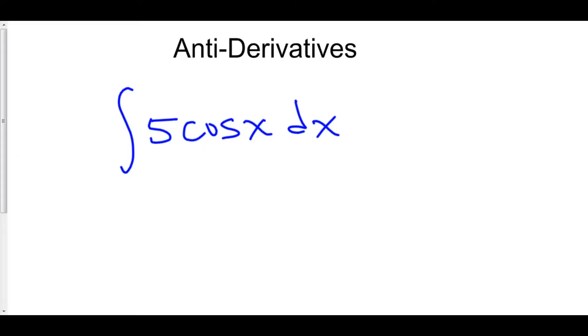Here we have the antiderivative of 5 cosine x dx. And just like with derivatives, you can take out the constant,